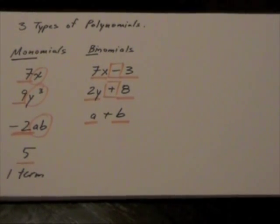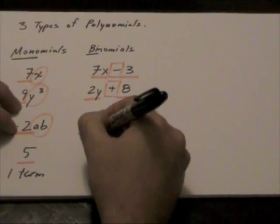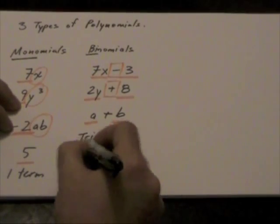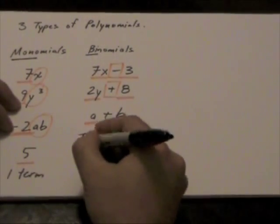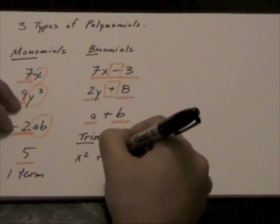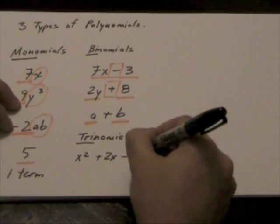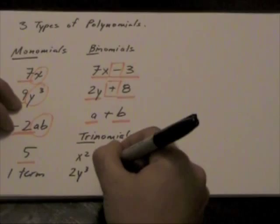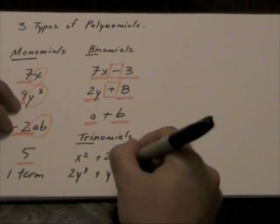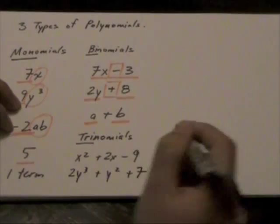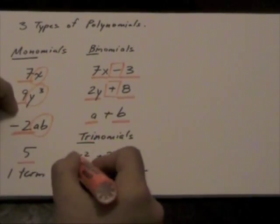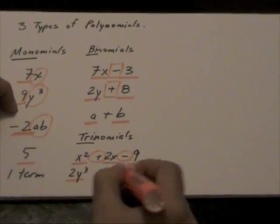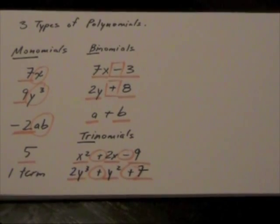And the last type of polynomial we have are called trinomials. And we can all guess what trinomials all consist of. They consist of three terms. And here's an example: x squared plus 2x minus 9. Another example might be 2y cubed plus y squared plus 7. Notice here how we have three terms separated by either addition or subtraction.